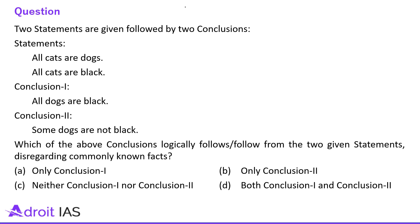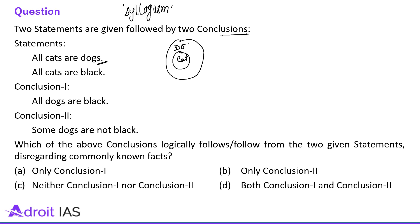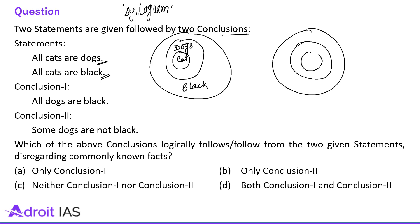The next question says: two statements are given followed by two conclusions. Statement one: all cats are dogs. Statement two: all cats are black. We'll solve this question with the help of a Venn diagram — this question belongs to the category of syllogism. So all cats are dogs means inside dogs, cats are there. All cats are black can be shown in two ways: first, black may encompass both cats and dogs; second, dogs and black may overlap with cats in the intersection.